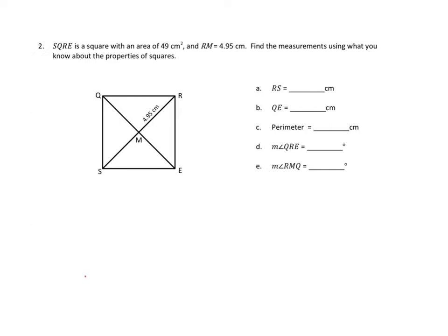What I'd like you to do first is pause for a second and think about everything you know about squares. Now that we're done pausing, let's figure out what we're up to. We know only a couple of things: we know that the area is 49 centimeters squared, and we know that one of these little halves of one of the diagonals is 4 and 95 hundredths centimeters.